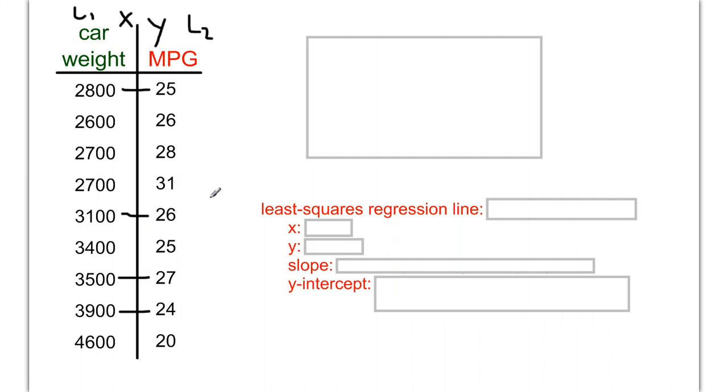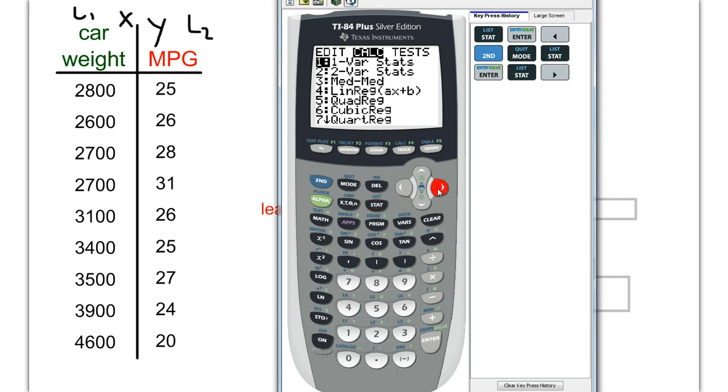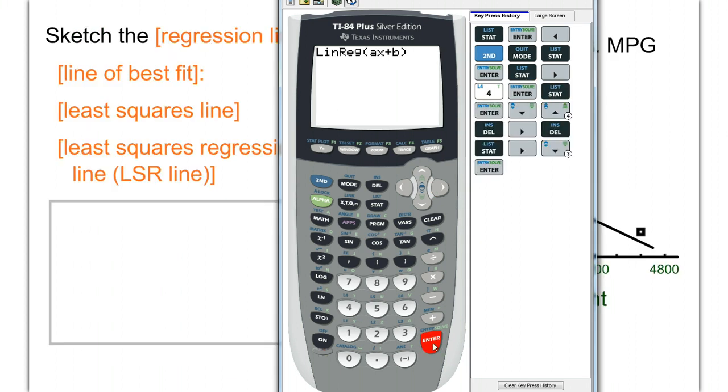If you don't do that, you might mix up your points. Once all the data is typed into list 1 and list 2, go to stat, calc, and down to number 4, linreg. Push enter.